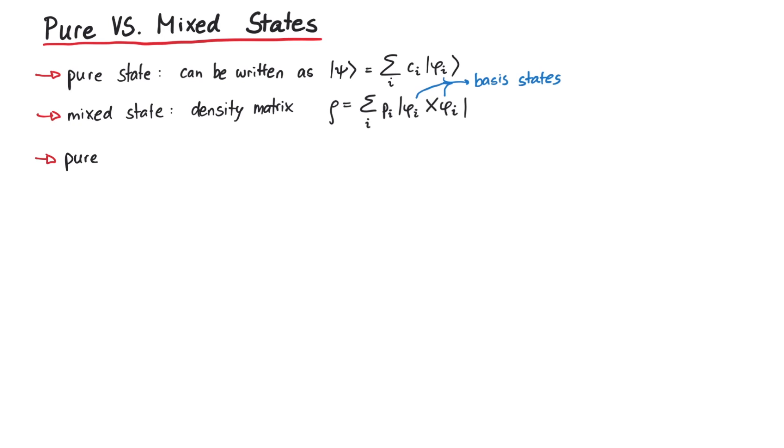If you only consider pure states, then many calculations in quantum mechanics can actually be done using either formalism. If a pure quantum state is both described by the ket psi and the density matrix rho, which is 100% in the state psi, then the expectation value of an operator A can be calculated like this.